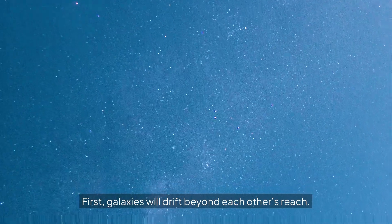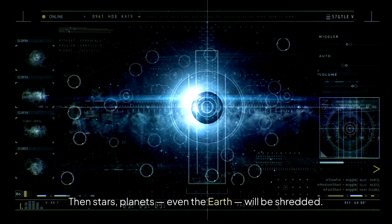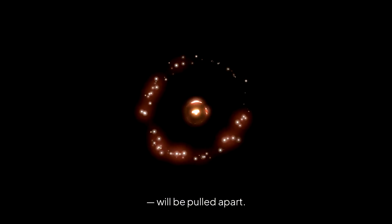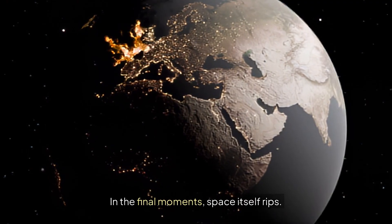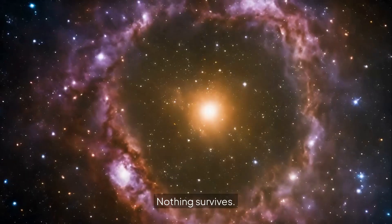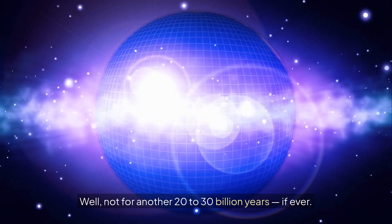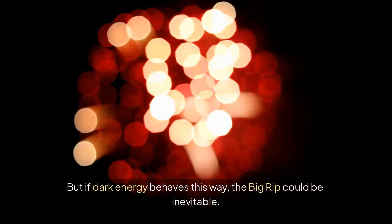First, galaxies will drift beyond each other's reach. Then stars, planets, even the Earth will be shredded. Eventually, even atoms—the building blocks of everything—will be pulled apart. In the final moments, space itself rips. Nothing escapes. Nothing survives. How soon could this happen? Well, not for another 20 to 30 billion years, if ever. But if dark energy behaves this way, the Big Rip could be inevitable.